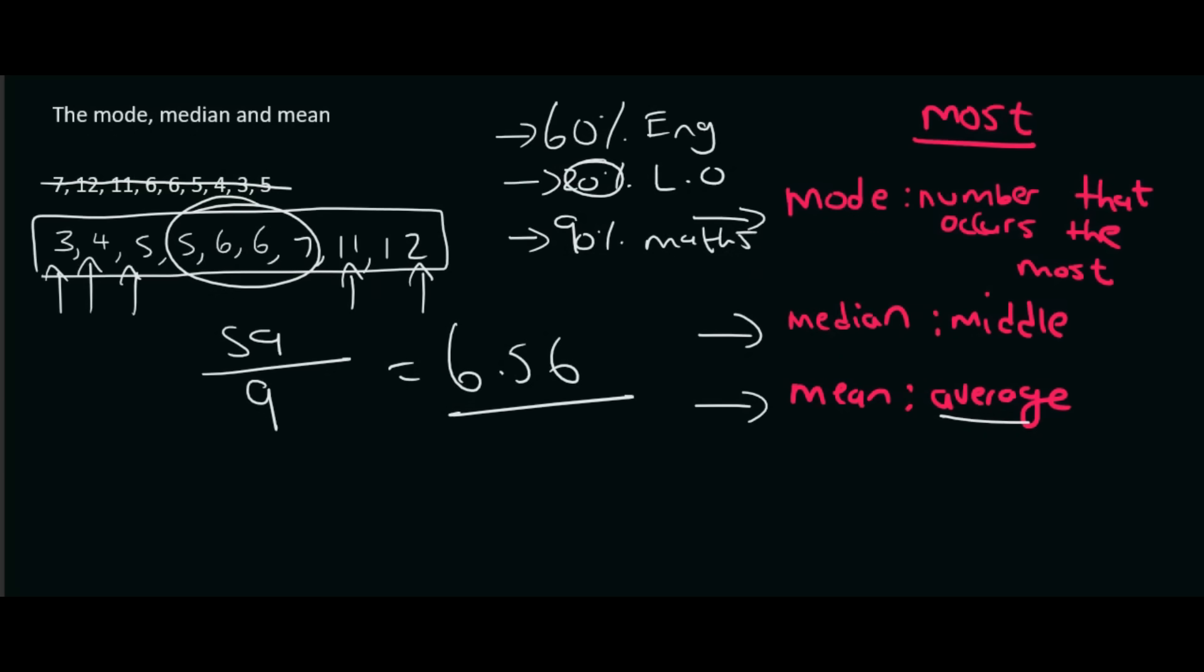So that would be 60 plus 20, which is 80. 80 plus 90 is 170. So your average is not 170%. You definitely have to divide by the number of subjects, and that is 3.